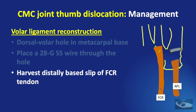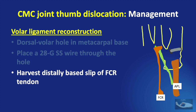A distally based slip of the flexor carpi radialis tendon is harvested, starting ulnarly so that as it spirals it ends radially. For diagrammatic purposes, the split part of the FCR tendon is shown in green color to differentiate it from the native FCR tendon shown in orange.